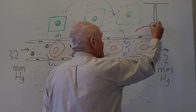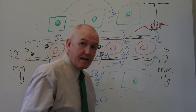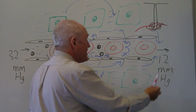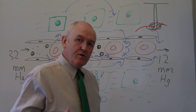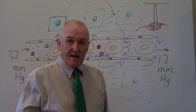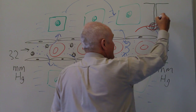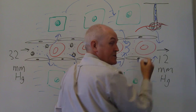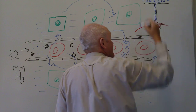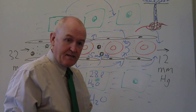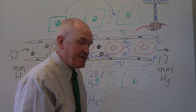Around the sweat gland you're going to have an array of capillaries — an arteriole taking blood to the area and a venule draining blood from the area. What the sweat gland does is extract water and some salt from the plasma, put it into sweat that goes up the sweat gland duct onto the surface of the body.